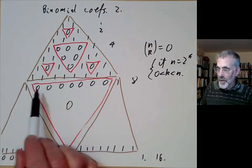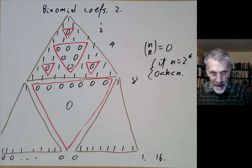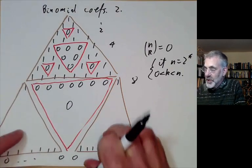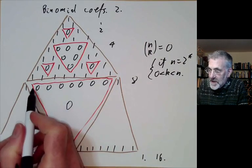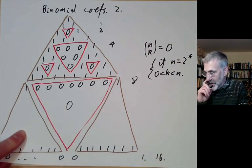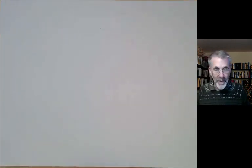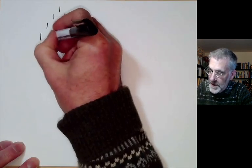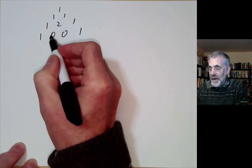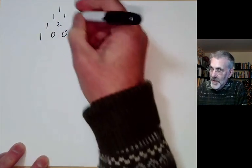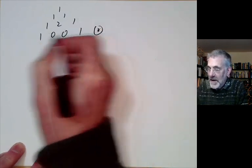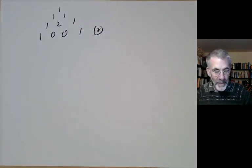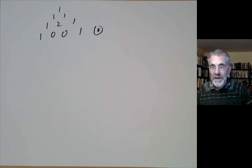We see that sometimes almost all entries of a row are divisible by two, and we can ask if the same thing happens for other primes. Let's try three: we have 1, 1, 1, 1, 2, 1, 1, 0, 0, 1 — writing zero if something's divisible by three — and you see this is row three and almost everything is divisible by three. In fact, the same thing happens for any prime.